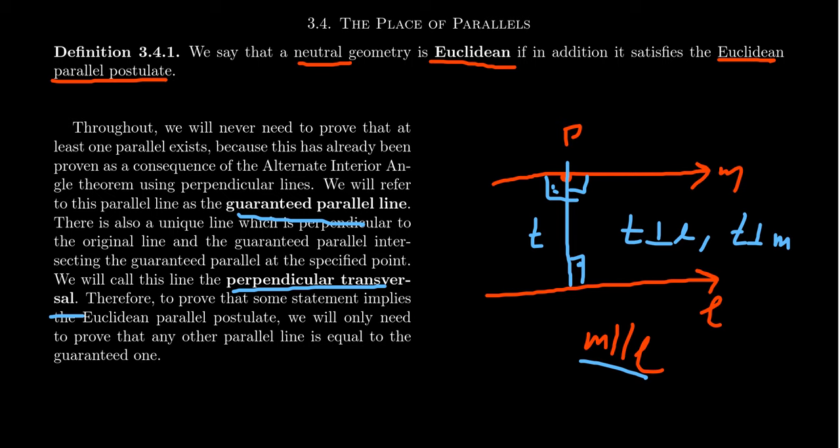Although the Euclidean parallel postulate could not be proven from the neutral axioms, many important equivalents to it were discovered throughout this journey — along with theorems of hyperbolic geometry. These useful theorems are what we're going to talk about in this lecture, and these are going to be theorems of Euclidean geometry. You could also phrase them as theorems of neutral geometry by saying these things are equivalent to EPP.